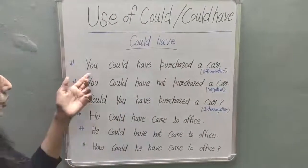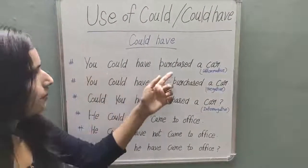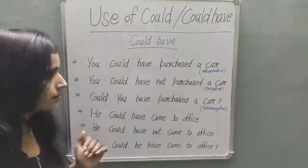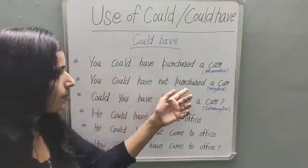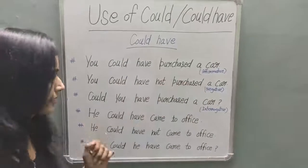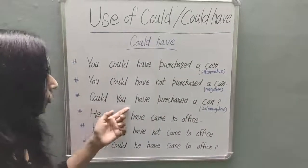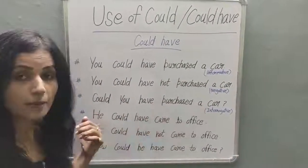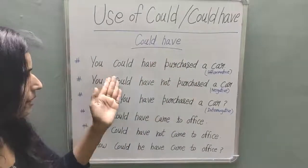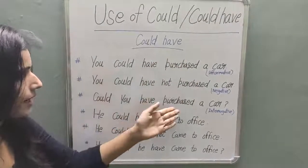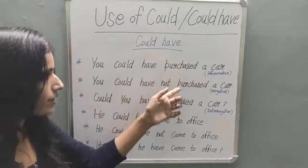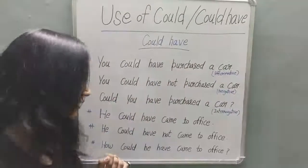Affirmative: 'You could have purchased a car' — meaning 'You could have bought a car.' Negative: 'You could not have purchased a car' — meaning 'You could not have bought a car.' Interrogative: 'Could you have purchased a car?' These are the three forms of 'could have', which uses the verb's 3rd form.